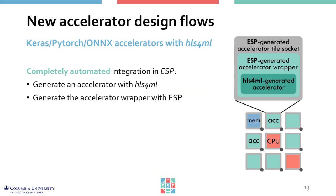Building on top of the Vivado HLS support, we created a completely automated flow for the integration of HLS4ML accelerators in ESP. There are two steps in the process: generate a Vivado HLS accelerator with HLS4ML starting from a machine learning application specified in Keras, PyTorch, or ONNX; and then with ESP, run the accelerator generation interactive script to automatically integrate the accelerator in ESP. With no further effort, the designer can instantiate the accelerator or multiple instances of it in the ESP graphical interface and proceed with full system RTL simulation and FPGA prototyping.